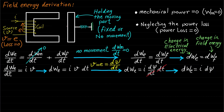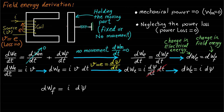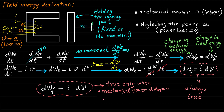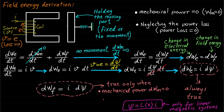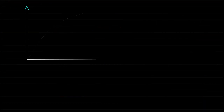Based on these two equations, we conclude that the field energy DWF is equal to I·dψ. Note that the change in electrical input energy DWE is always equal to I·dψ. However, the rate of change in field energy DWF is equal to I·dψ only when the mechanical power is zero and there is no movement. We avoided substitution of the expression ψ = L·I, which belongs to linear magnetic systems, to keep these formulas general for both linear and non-linear magnetic systems.